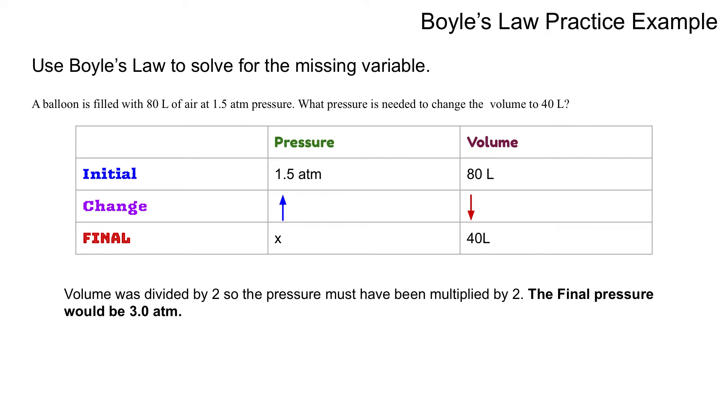Here's an example problem. Use Boyle's law to solve for the missing variable. A balloon is filled with 80 liters of air at 1.5 ATM pressure. What pressure is needed to change the volume to 40 liters?